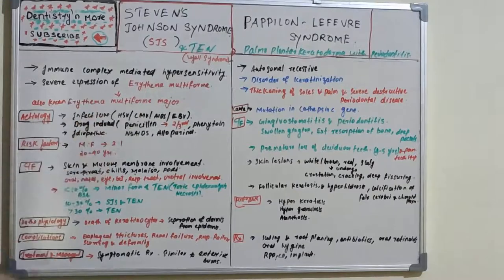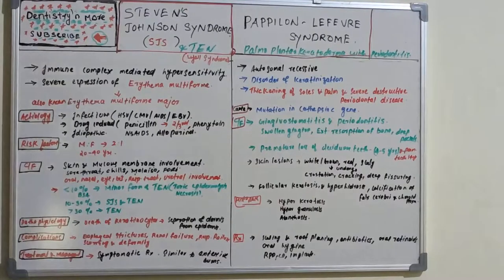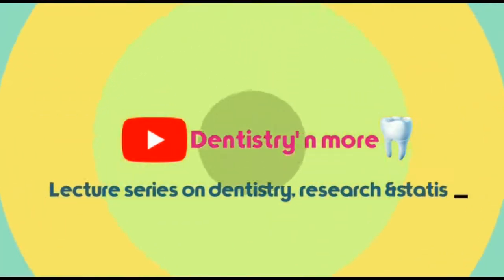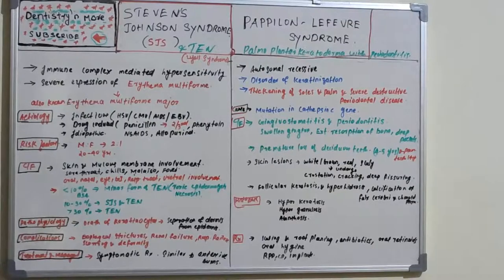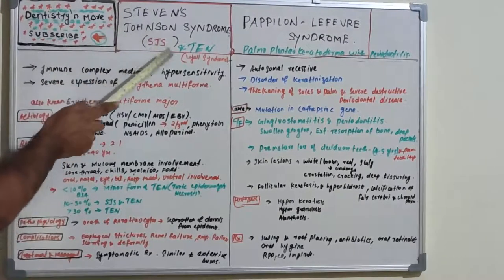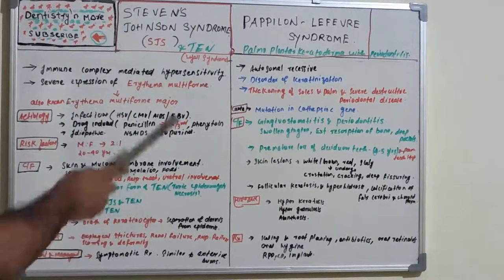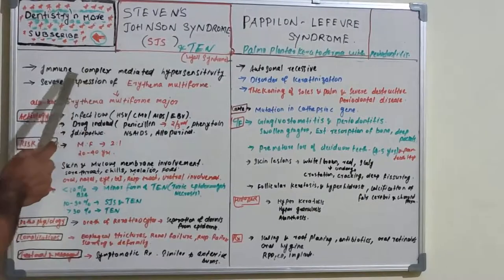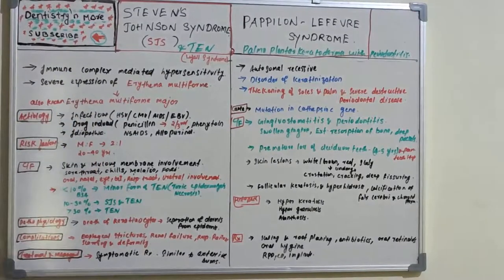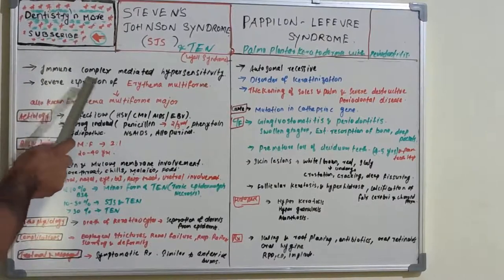Stevens-Johnson syndrome is also known as toxic epidermal necrolysis or Lyell syndrome. These two should be studied together. Stevens-Johnson syndrome is an immune complex mediated hypersensitivity reaction to certain drugs or certain infections, and it differs from Lyell syndrome only in the severity of the skin reaction.